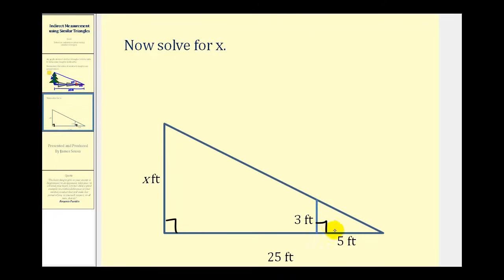And again we know we have two similar triangles by angle, angle similarity. So let's go ahead and set up our proportion. X to three must equal twenty-five to five.